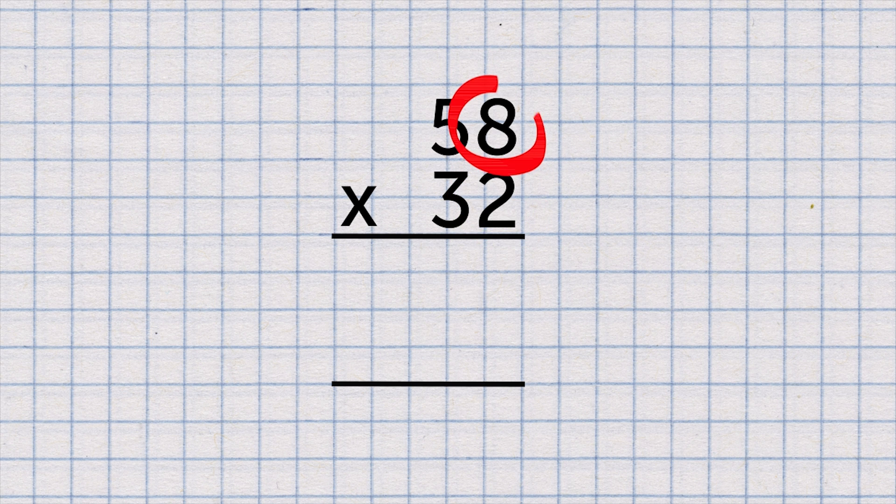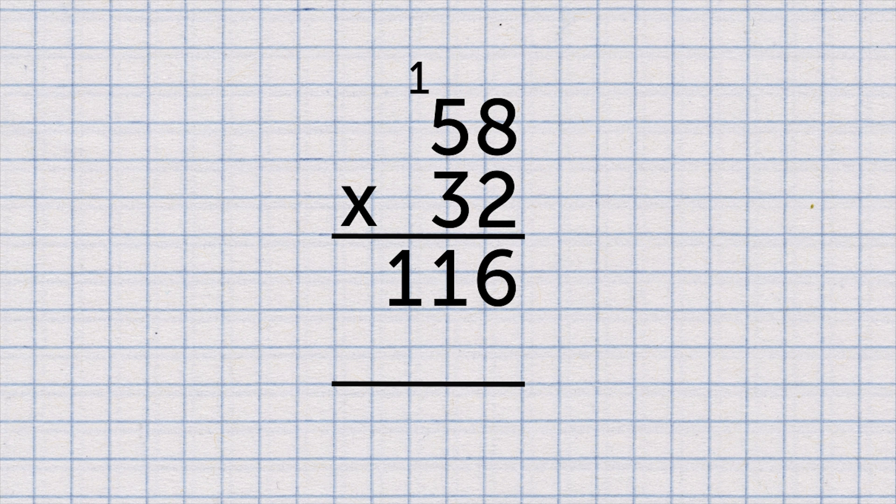First, 2 times 8 is 16. Put the 6 in the ones column and carry the 1 over. Write 1 above the 5. Now 2 times 5. That's 10. Plus the 1 carried over, 11. 116.